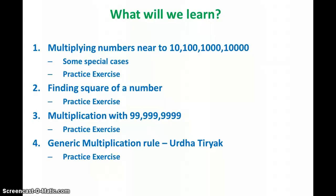In Section 2, we are trying to find the square of a number, again with special cases like numbers nearing 10, 10,000, and 100,000. The third section will cover numbers that can be multiplied with 99, 999, 9999, and so on.